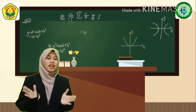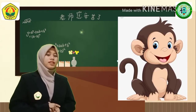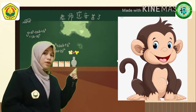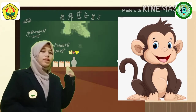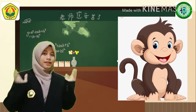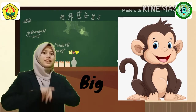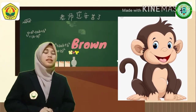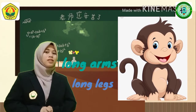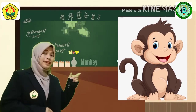Okay, student. Now, I want you to look at this picture. Look at this animal. What is it? It is big. It is brown. It has long arms and long legs. It is a monkey.